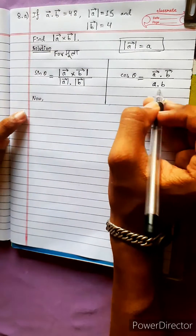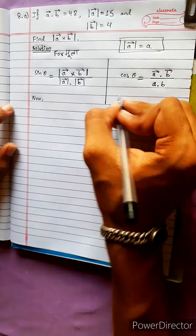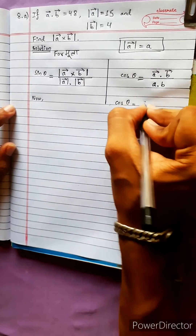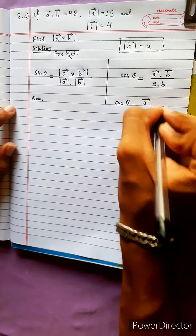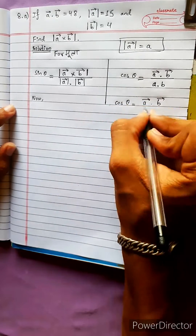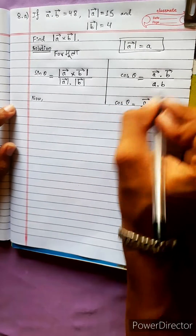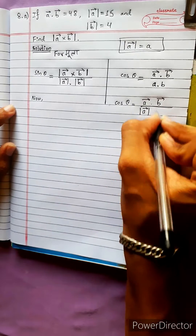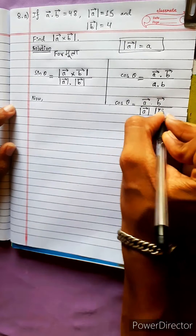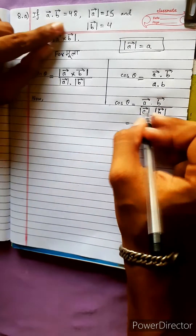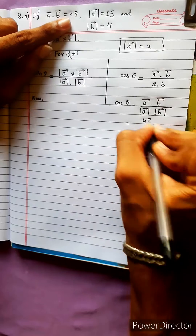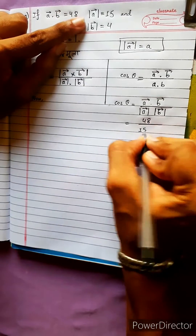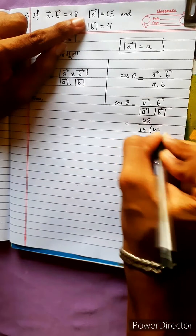We see cos theta. Cos theta equals a vector dot b vector divided by the magnitudes of a and b. This is 48 divided by 15 times 4, which simplifies to 12 by 15.